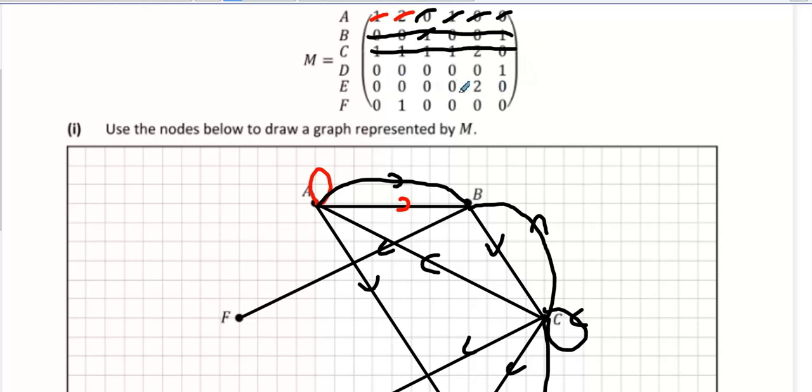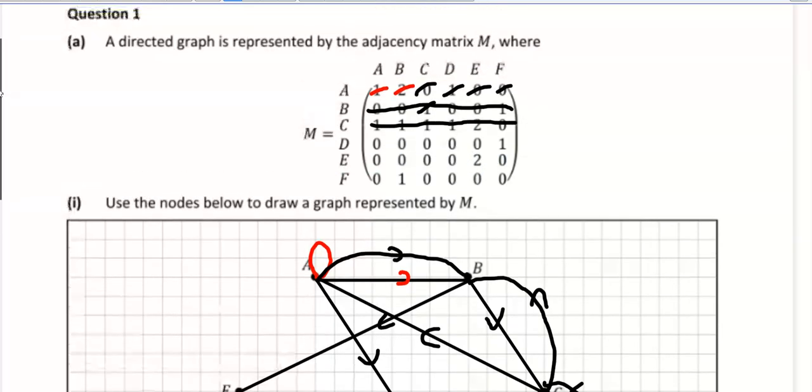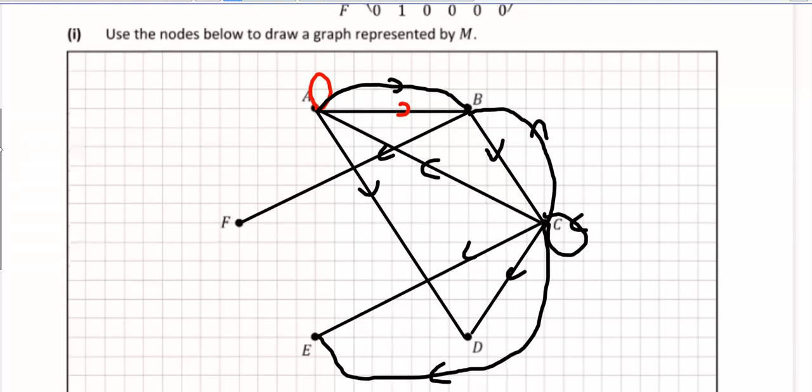D goes to nobody but F. So where's D? And it only goes to F once.